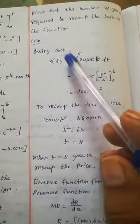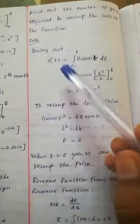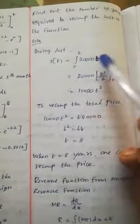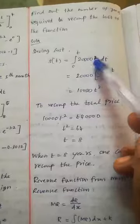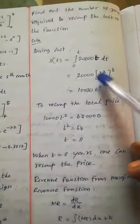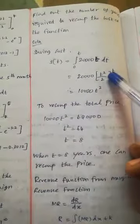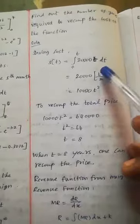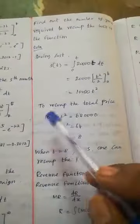S(t) equals the saving cost. S(t) = ∫20,000t dt with limit 0 to t. This equals 20,000[t²/2] from 0 to t. Then we recoup the total price.